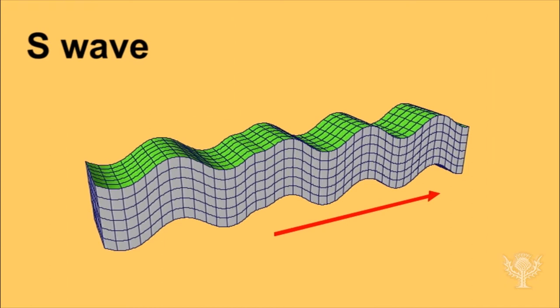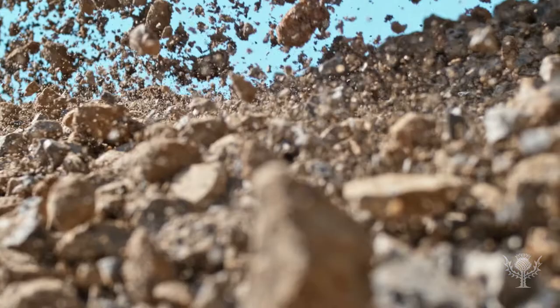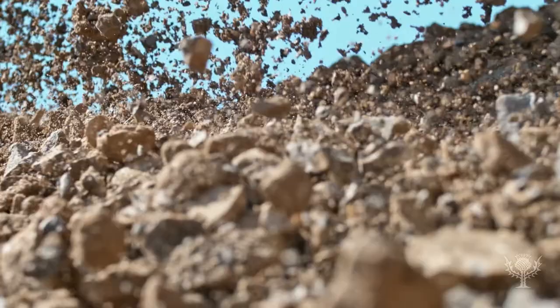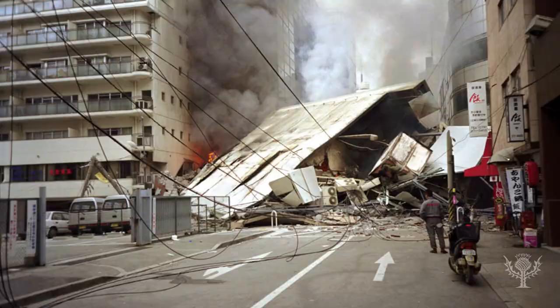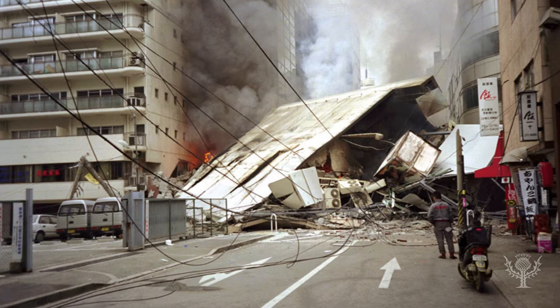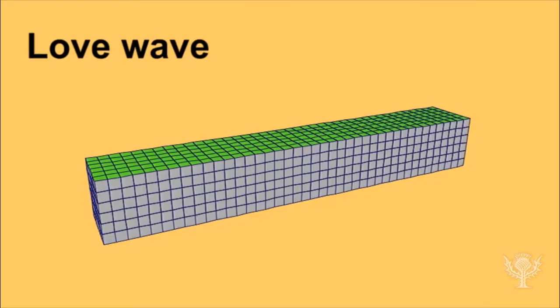Next come the S waves. These body waves are stronger and travel farther, so more people feel them during an earthquake. As they travel, they move rock particles up and down or side to side.